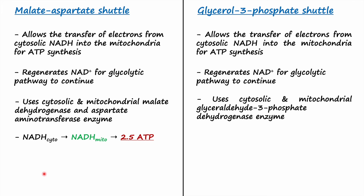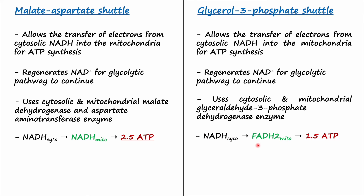In the malate-aspartate shuttle, electrons from cytosolic NADH are passed on to NAD+ in the mitochondria, which is then reduced to NADH. The electrons from this NADH are transferred to the electron transport chain to synthesize ATP, and the malate-aspartate shuttle synthesizes 2.5 molecules of ATP. In the glycerol-3-phosphate shuttle, electrons from cytosolic NADH are passed on to FAD in the mitochondria, FAD is reduced to FADH2, and FADH2 gives up electrons to the electron transport chain to synthesize 1.5 molecules of ATP.